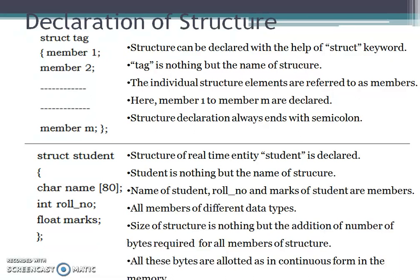Now let's see the example. If we want to declare a student structure, it is declared with the struct keyword followed by student as the structure name. The name of the student is declared as a character string of size 80 characters. The second member is roll number of type integer, and the last member is marks of type float. All members are of different data types. The size of a structure is the sum of bytes required for all its members, and all these bytes are allotted in continuous form in memory.